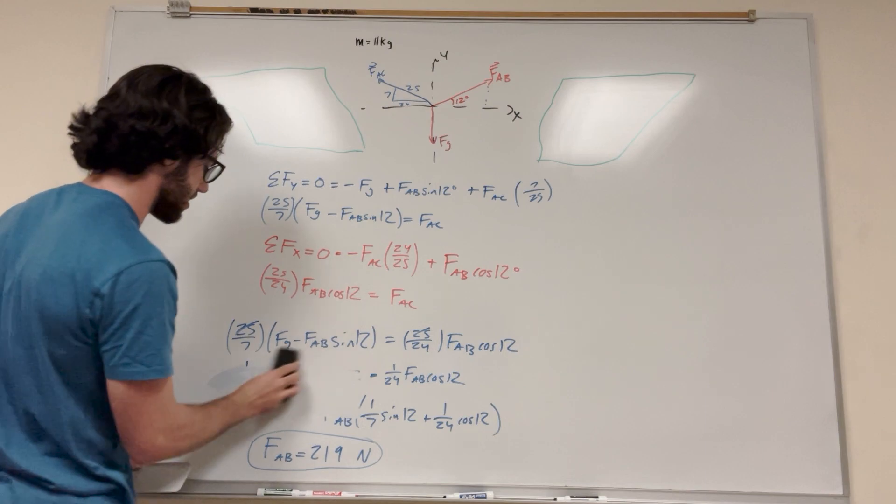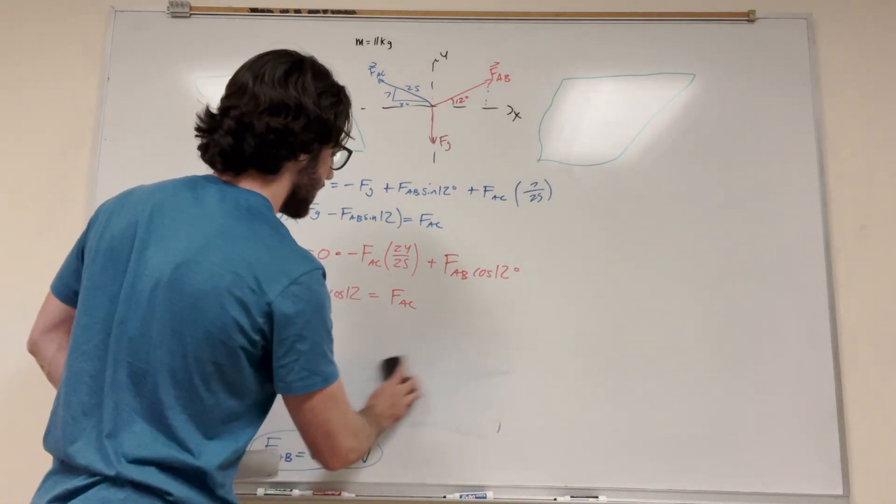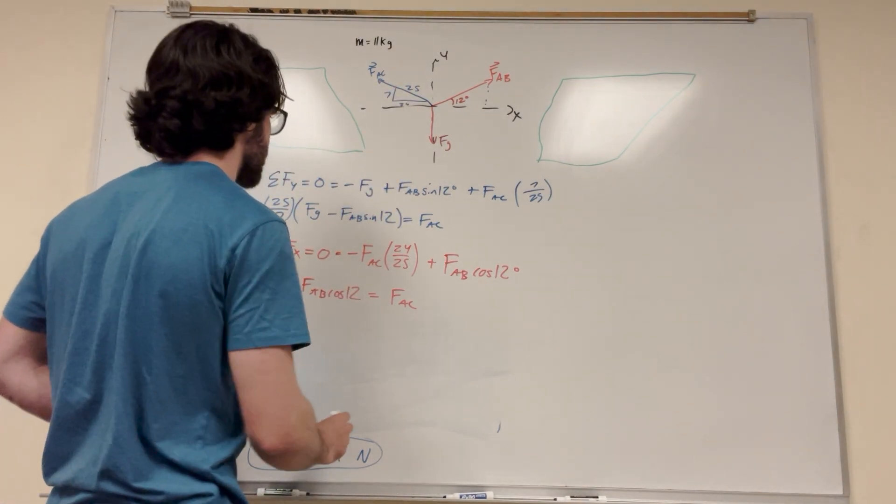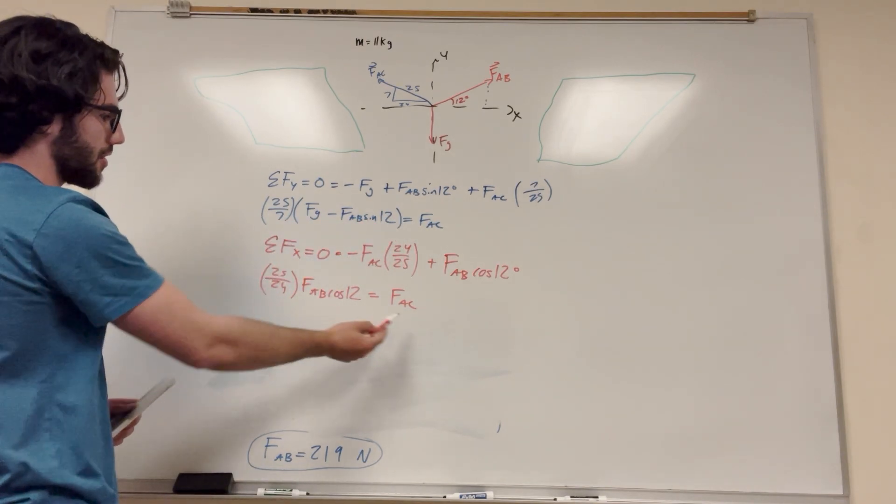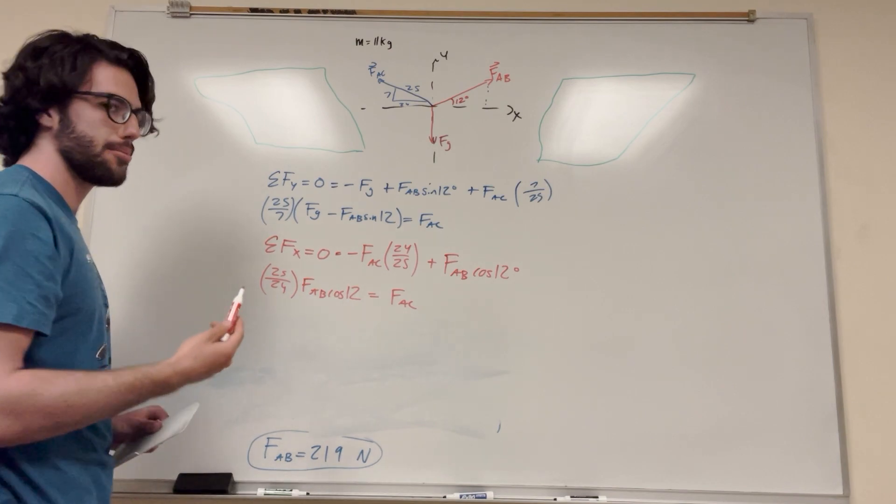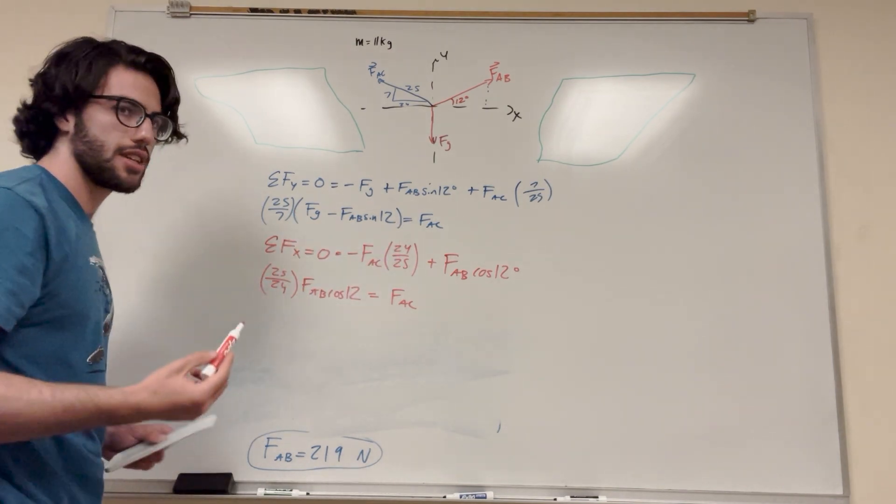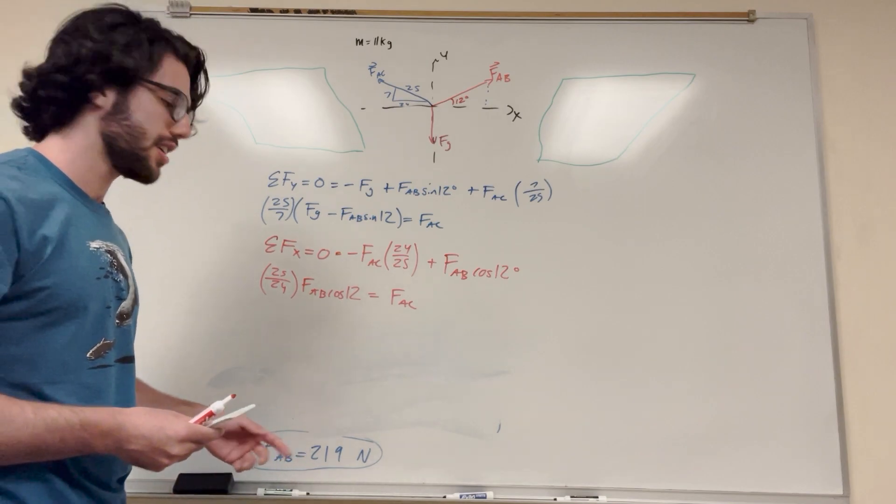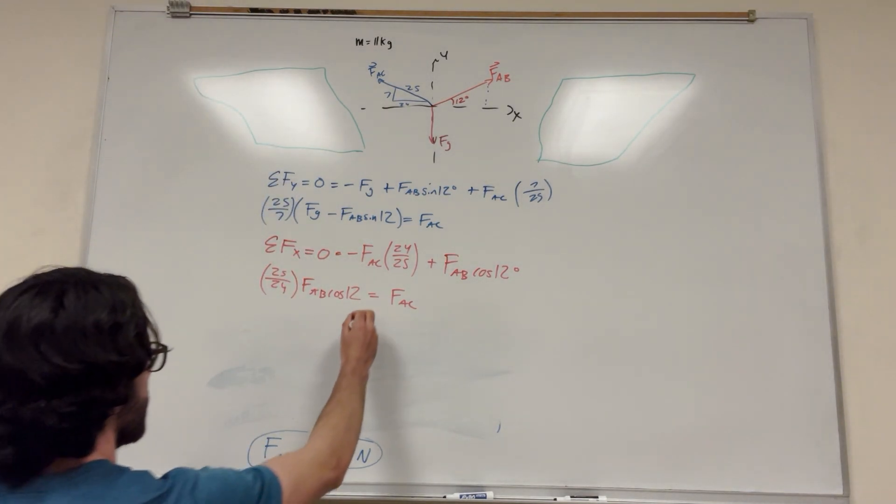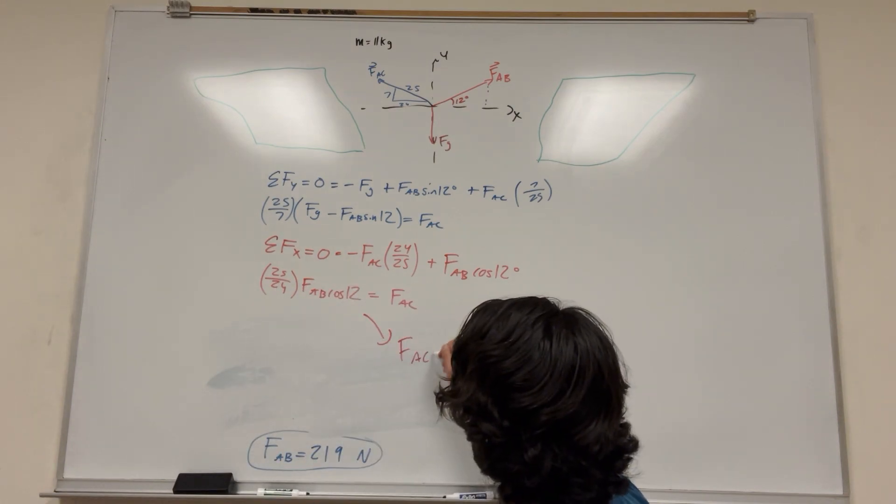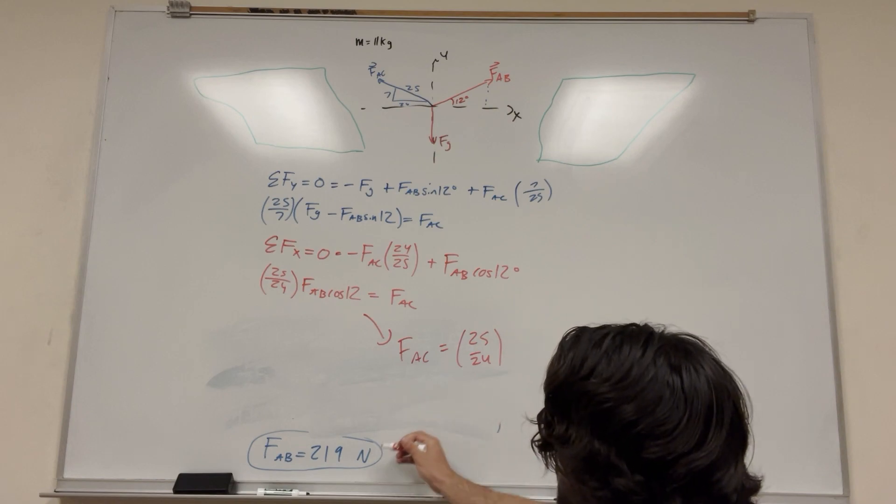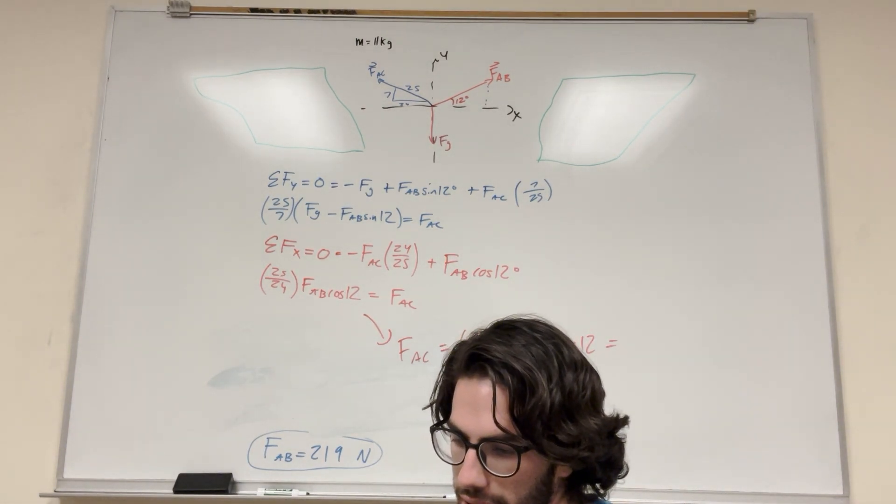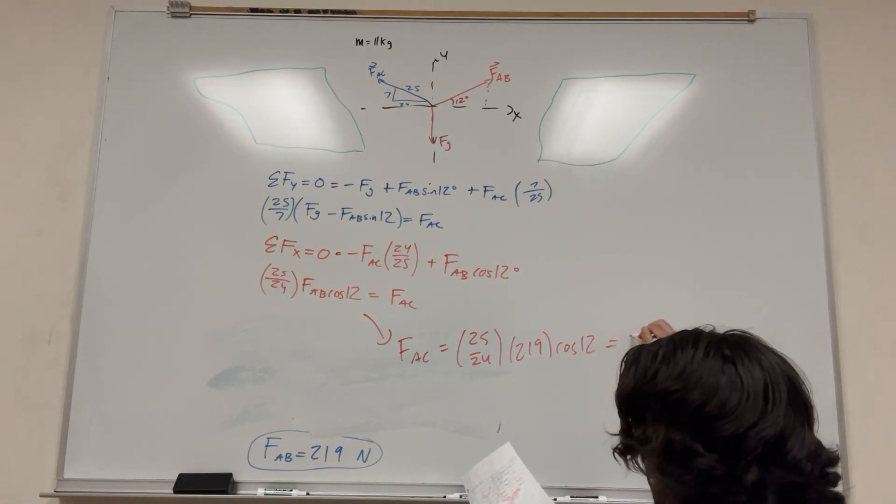I'm just going to go ahead and erase this because I don't really need it anymore. I need to find what force AC is. So force AC, we already have two convenient equations to solve what force AC is. We wrote this equation, just have to plug in what we know. And we also wrote this equation. So this one looks like it's going to be easier to plug into. But a good test is you can plug into both of these equations and you should get the same number. If you get the same number, that means you're probably on the right track. If you get a different number, you probably got a wrong answer. So I'm going to just go ahead and write it into this equation. So force AC is equal to 25 over 24, force AB, which we just found, 209, cosine of 12. And if you do that math, you get AC is equal to 223 newtons.